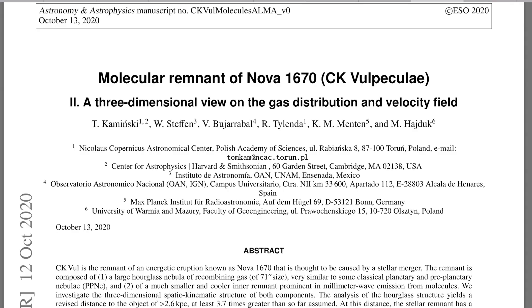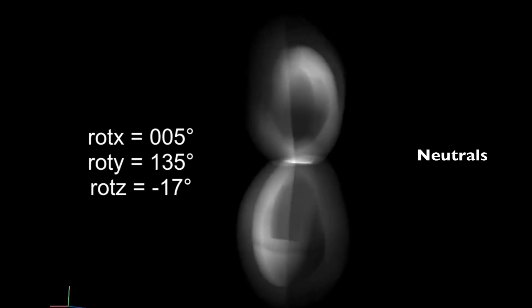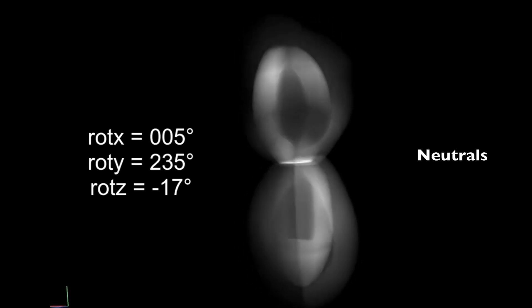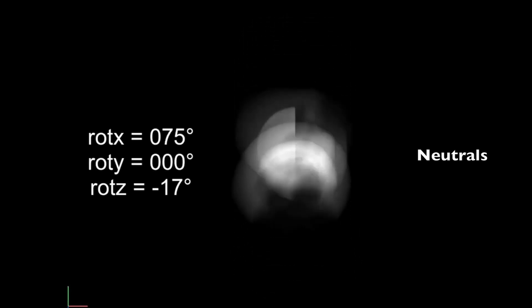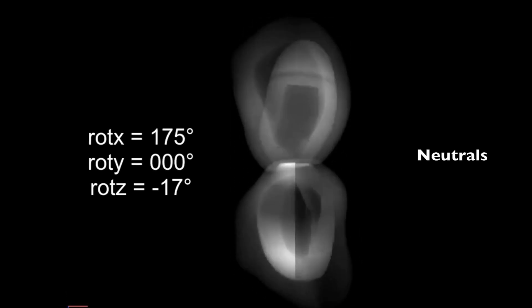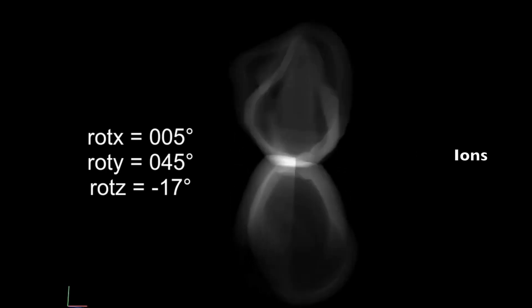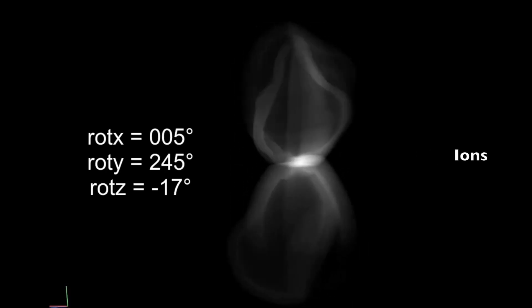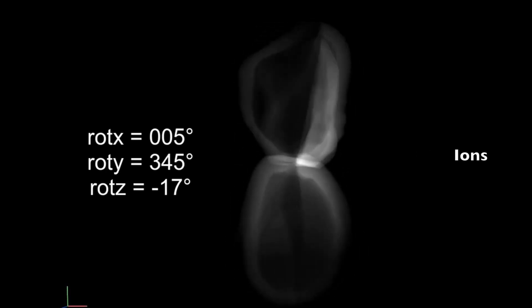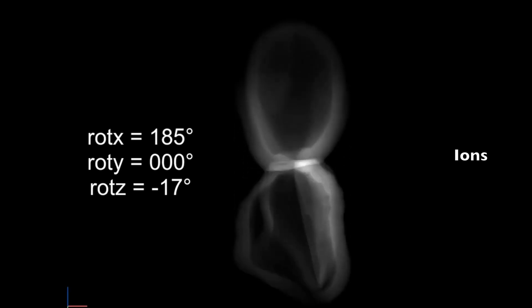We've got two visualizations, with the first modeling both the neutral components and the charged components of a nova remnant. Interesting that both models form the same loop features off the north and south poles, just as we see with the galactic Fermi bubble lobes.